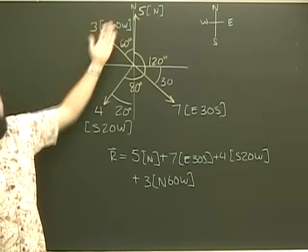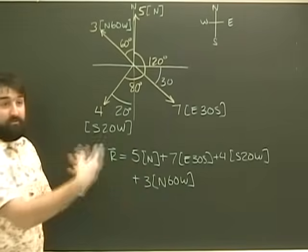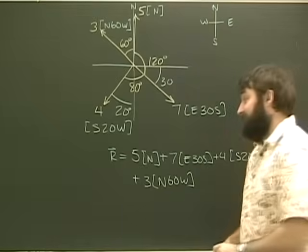Of course, this vector 5 is not really in the north direction, we just pretended it was. Now, we did this so that we can put them all together and get an answer.